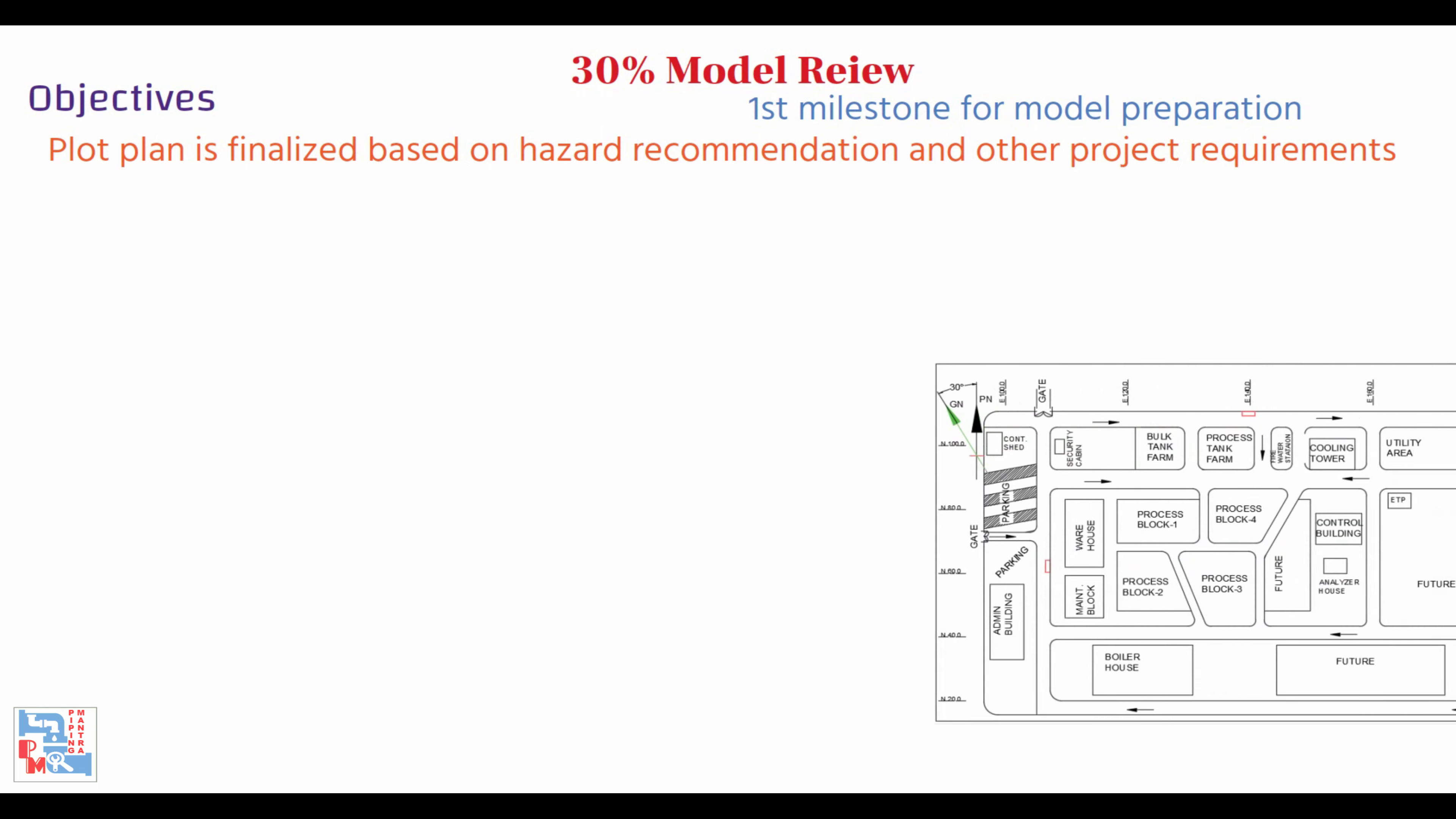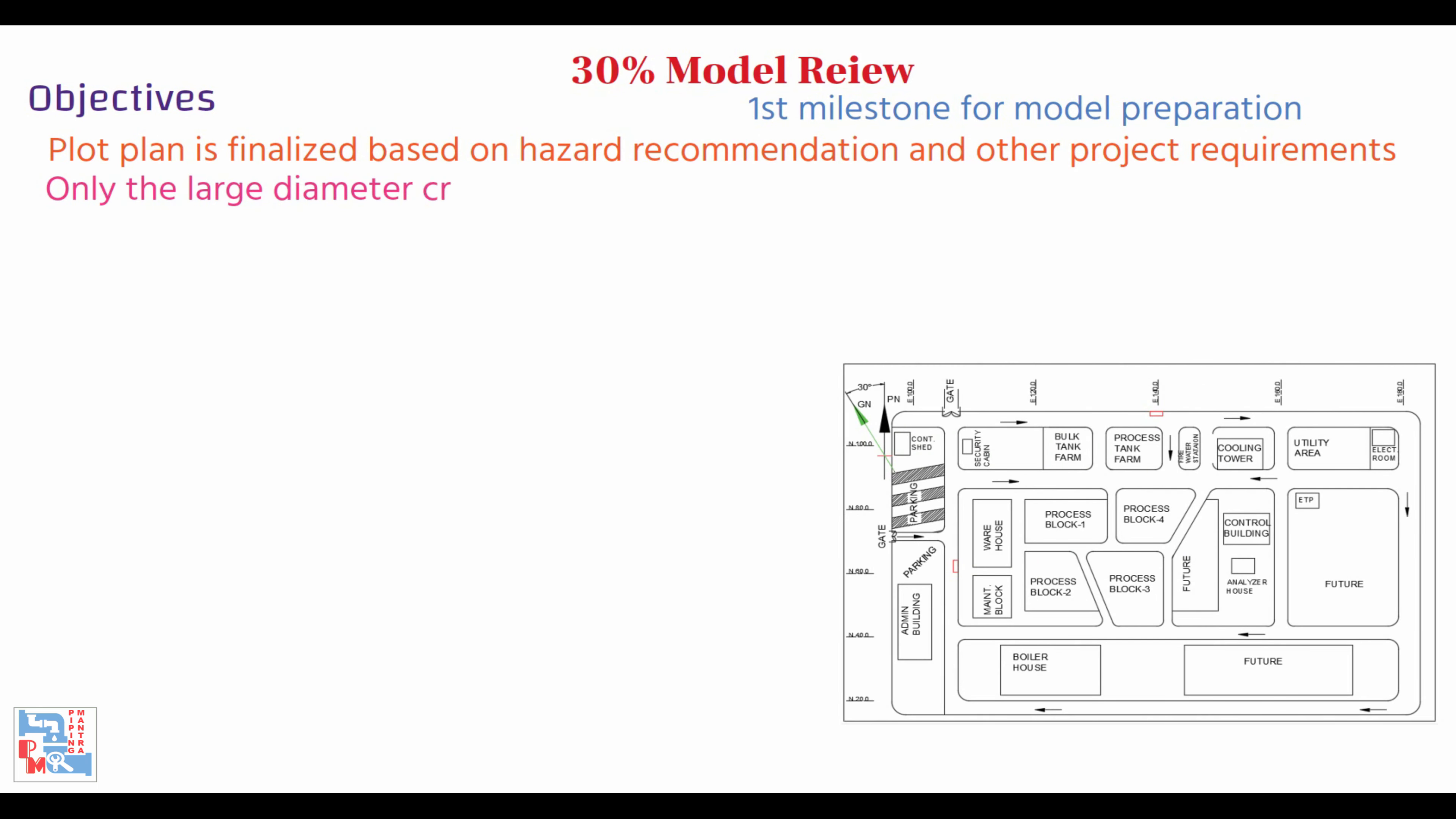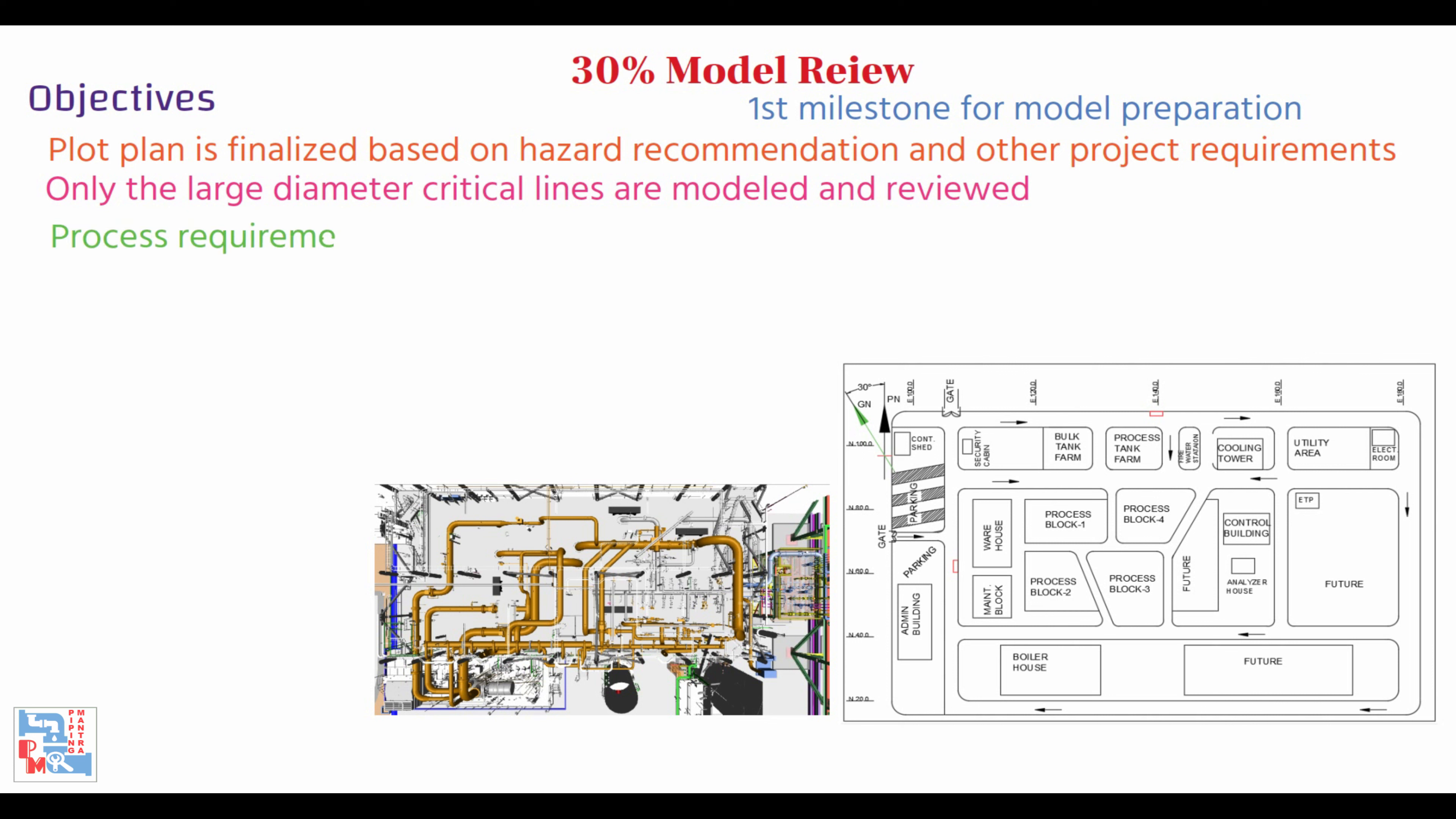Now let's see about 30% model review. A 30% model review means the first milestone for model preparation—all the design data is not available at this stage. At this stage, plot plan is finalized based on hazard recommendations and other project requirements. Only the large diameter critical lines are modeled and reviewed as per process requirements like free drain or no pocket requirements, and according to these the location of equipment is finalized.